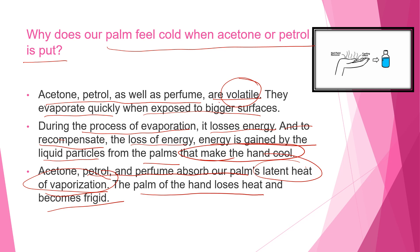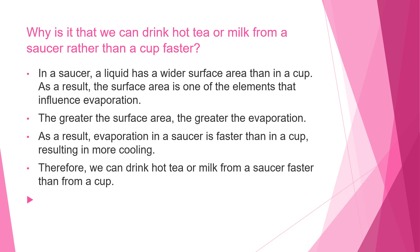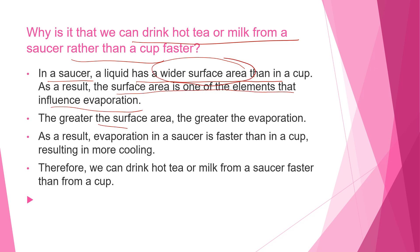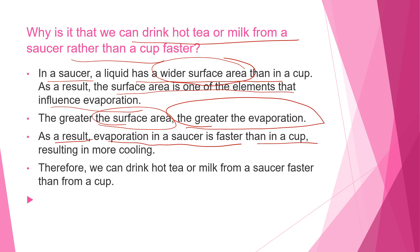Why do we drink hot tea or milk from a saucer rather than a cup faster? In a saucer, the liquid has a wider surface area than in a cup. Surface area is one of the elements that influences evaporation — the greater the surface area, the greater the rate of evaporation. As a result, evaporation in a saucer is always faster than in a cup, so the liquid cools faster and we can drink it sooner.